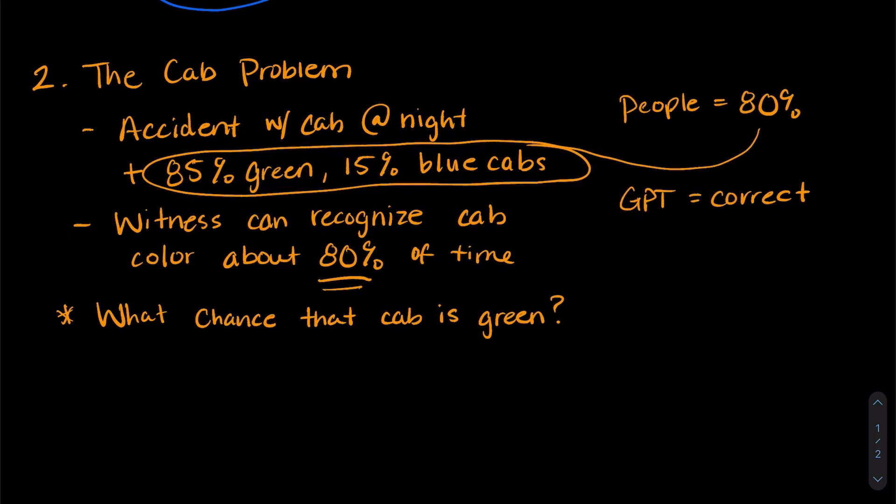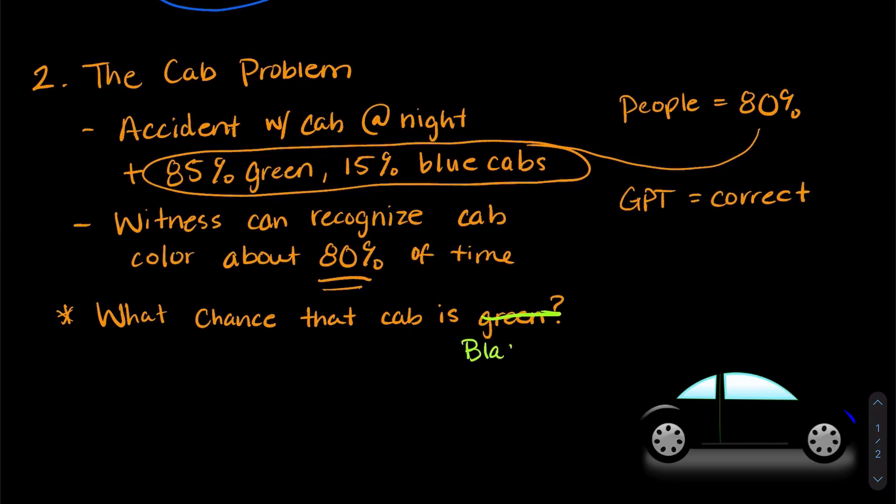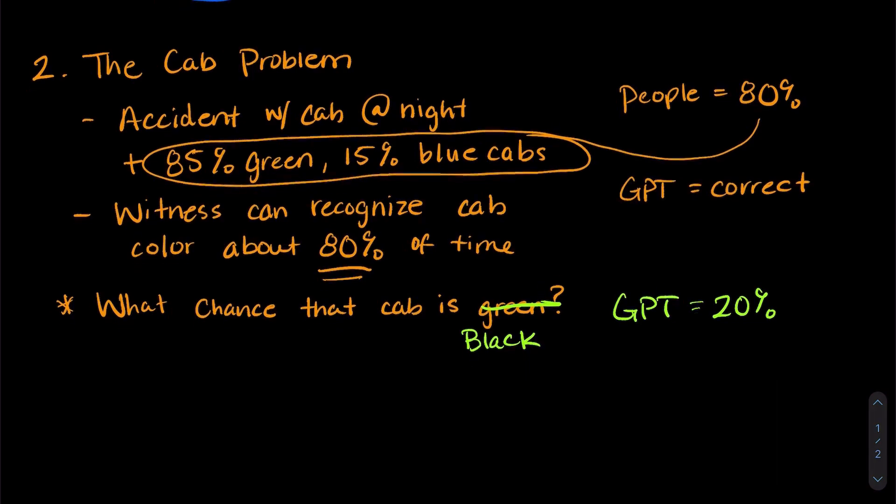But if we change the wording subtly, GPT makes some weird mistakes that humans wouldn't. So for example, if we changed our question to what is the chance that the cab is black? GPT then says 20%, which doesn't make any sense because there aren't any black cabs in the city. A human wouldn't make that mistake. So a subtle change in wording can change the ability of GPT to answer something correctly.